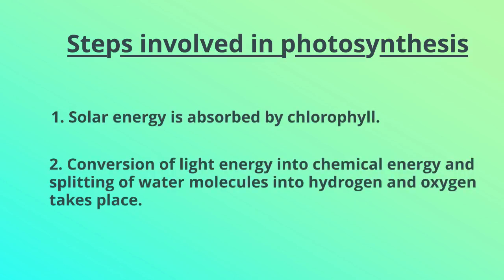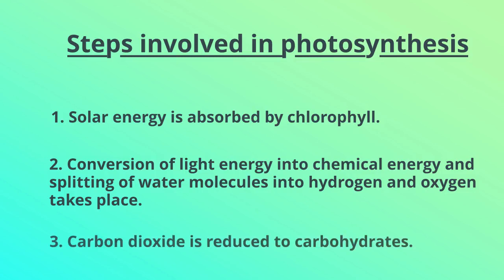Once solar energy is absorbed by chlorophyll, conversion of light energy into chemical energy and splitting of water molecules into hydrogen and oxygen takes place. Then the carbon dioxide is reduced to carbohydrates. These three steps usually occur one after the other, but they differ in a few plants.